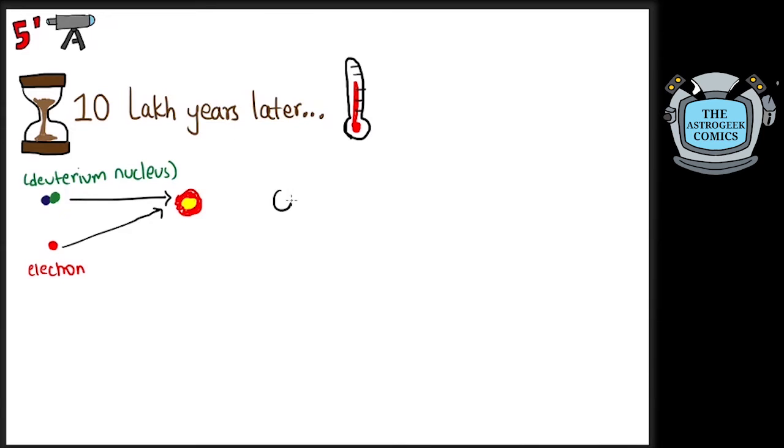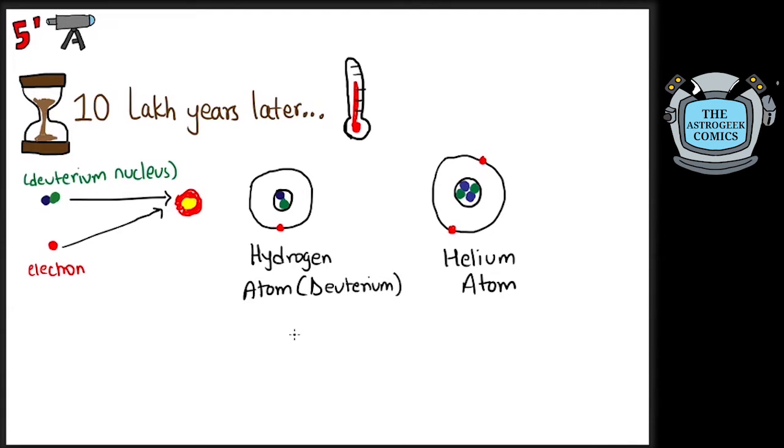In 1 lakh years, the temperatures lowered further to allow the formation of stable atoms as electrons attached with the nuclei. The simplest atom is the hydrogen atom with 1 electron, followed by helium that has 2 electrons. During this, molecules like helium hydride formed too, which was discovered in 2019 in the universe.